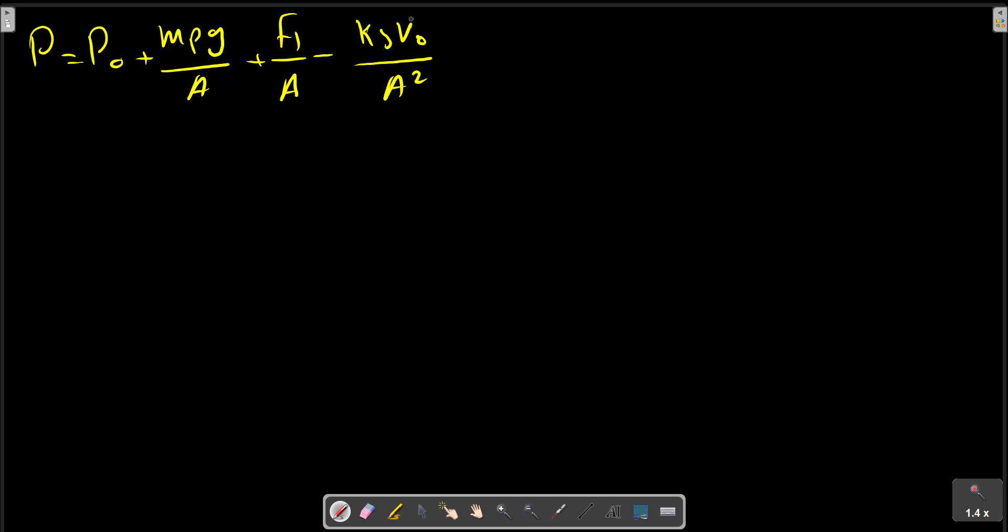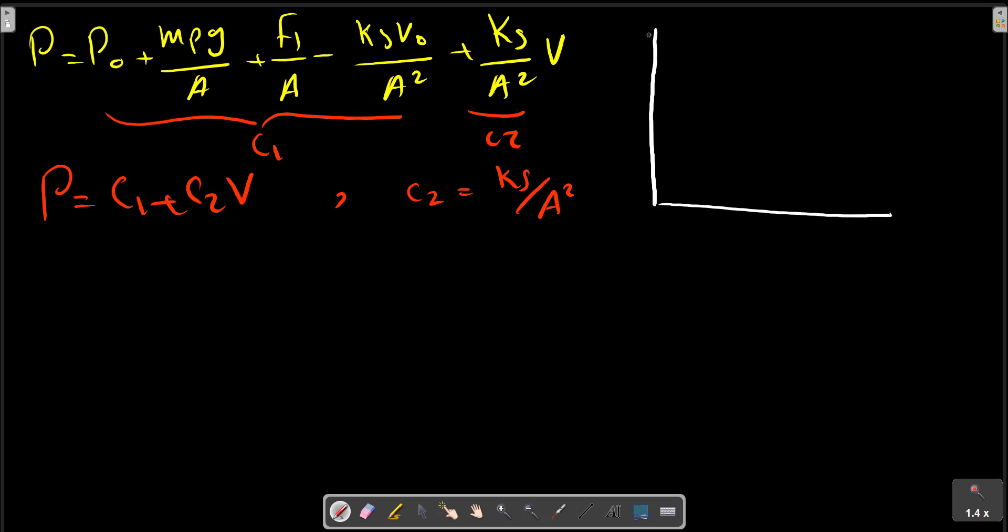So P equals P0 plus mp·g over A plus F1 over A, plus k·S over A squared times V minus k·S·V0 over A squared. The first part is constant, so P can be written as C1 plus C2·V, where C2 is k·S over A squared.